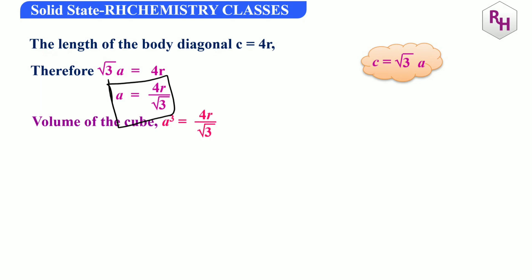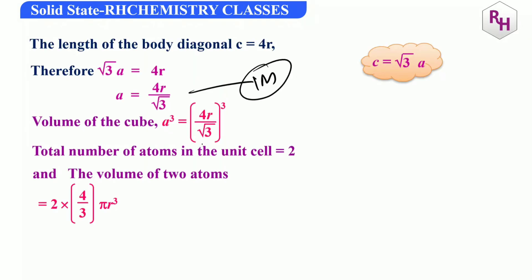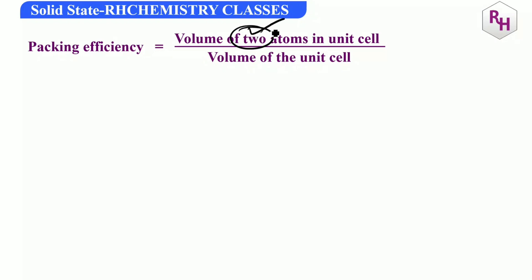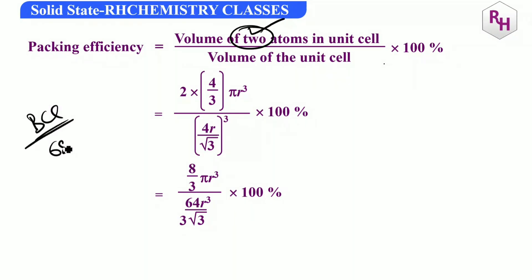Volume of the cube = A³ = (4R/√3)³. Total number of atoms in BCC = 2. Volume of 2 atoms = 2 × (4/3)πR³ = 8/3 πR³. Packing efficiency = (8/3 πR³) / (4R/√3)³ × 100 = (8/3 πR³) / (64R³/3√3) × 100. After cancelling R³, packing efficiency of BCC = 68%.